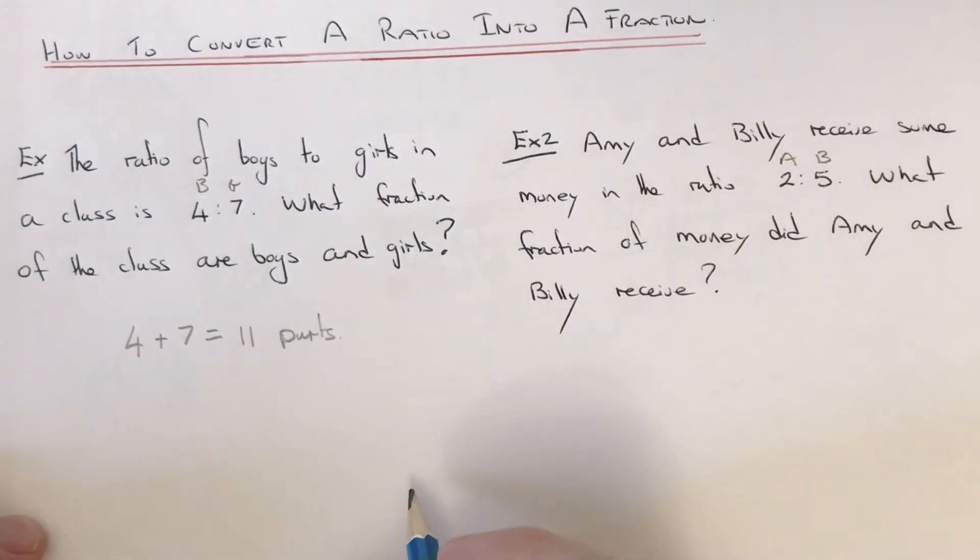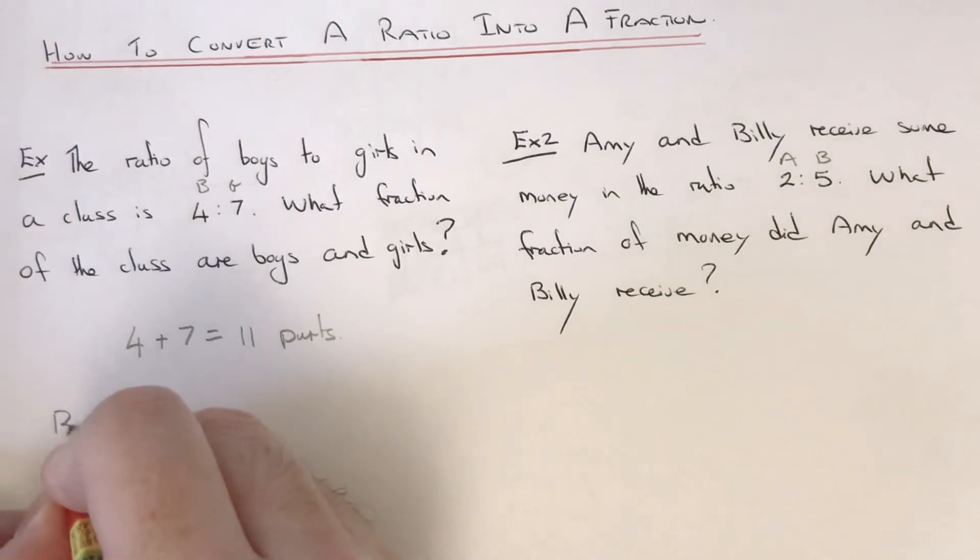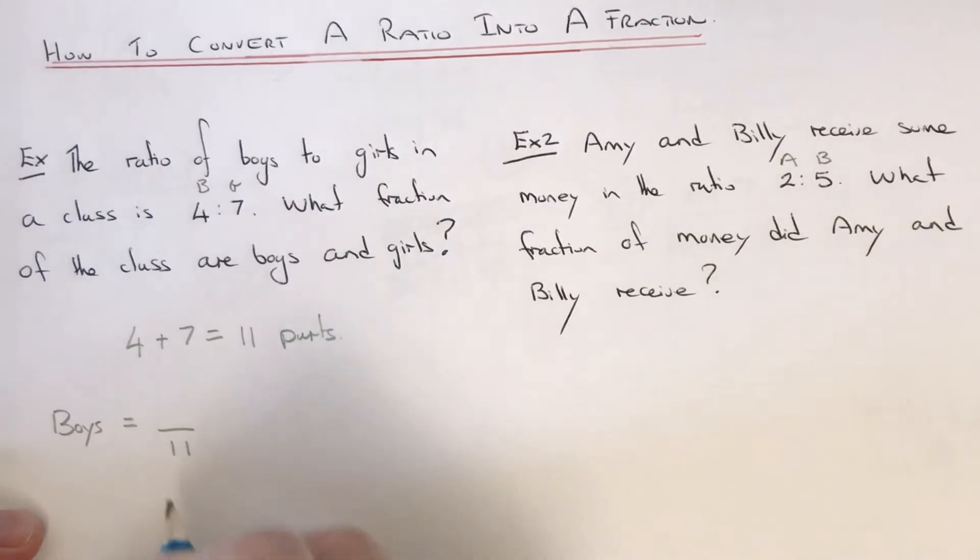the denominator of both fractions. Let's do the boys first of all. We put this 11 on the denominator, and since it was 4 parts boys, we put the 4 on the numerator. So the fraction of boys is 4/11.